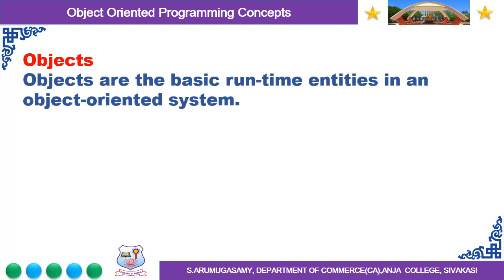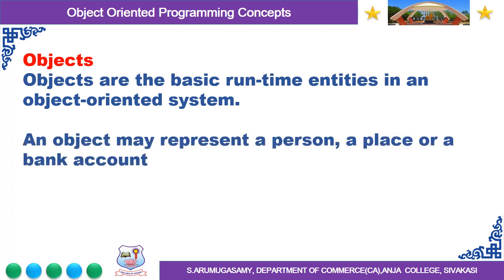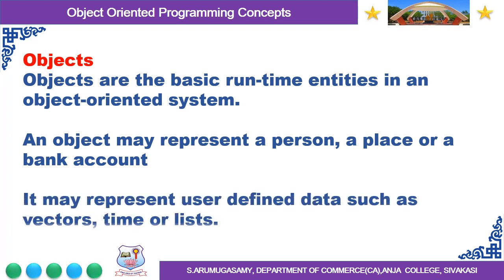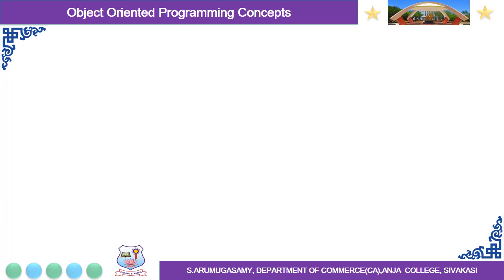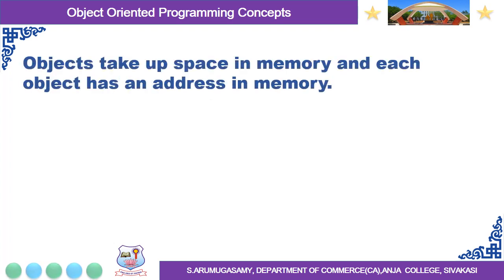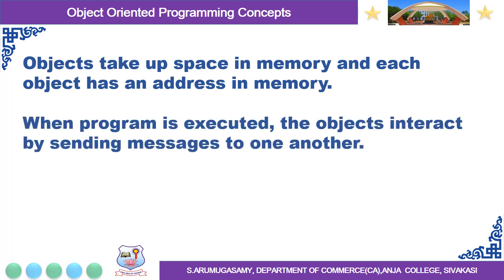The first concept is Objects. Objects are the basic runtime entities in an Object Oriented System. An object may represent a person, a place, or a bank account. It may represent user-defined data such as vectors, time, or lists. Objects take up space in memory and each object has an address in the memory. When the program is executed, the objects interact by sending messages to one another.